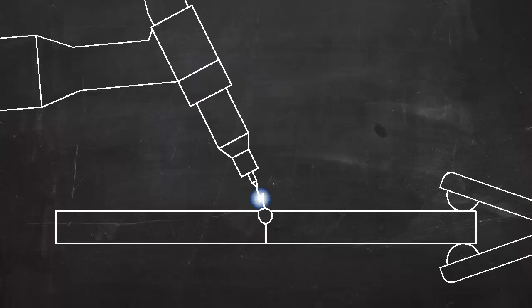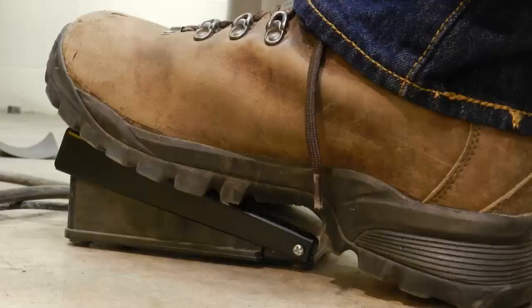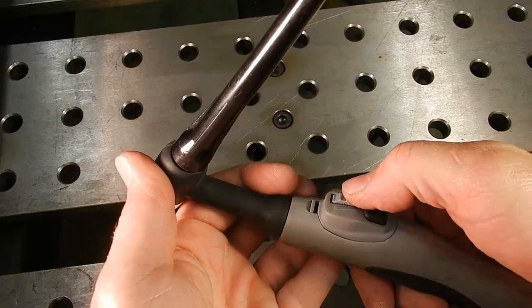TIG works by melting the base metal, that is, the metal that makes up the two pieces that are to be joined. The heat is generated by an electric arc that forms between the base metal and the tungsten electrode. You can control the amount of heat with a foot pedal or with a thumb wheel on the torch.